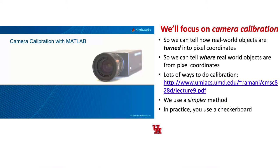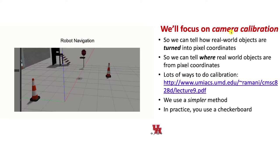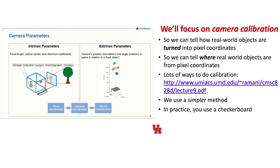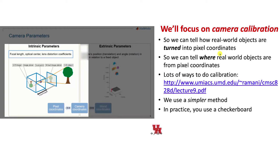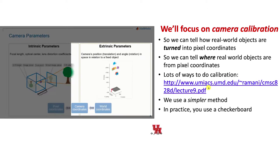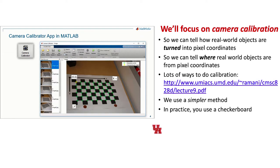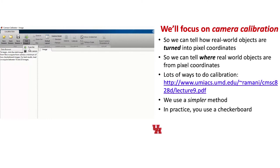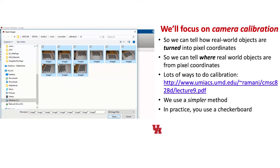In our class, we're going to focus on the things we can solve with trigonometry — camera calibration, how to tell where coordinates are of the camera and objects, and how real-world objects are turned into pixel coordinates under our image plane. There are lots of ways to do calibration; I'd recommend the ones with MATLAB — they've got a nice tutorial. We're going to use a simpler method because if you can understand it, you'll have insight into what's going on when other methods use nonlinear optimization.